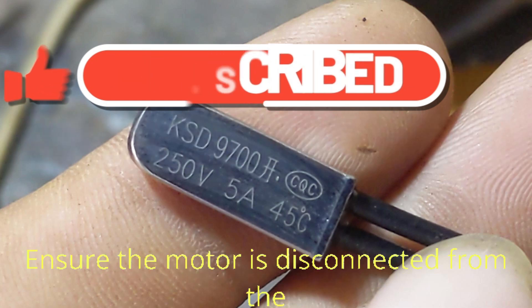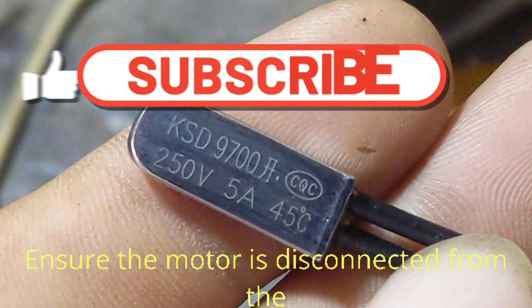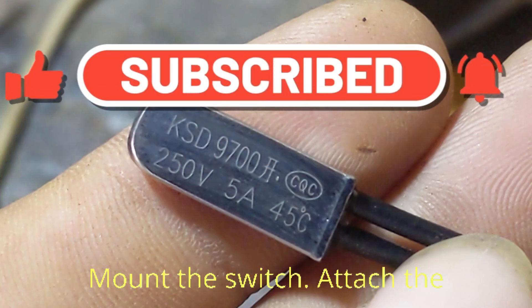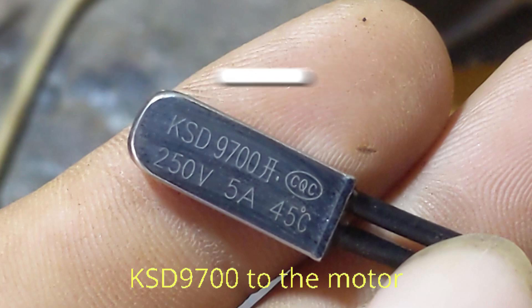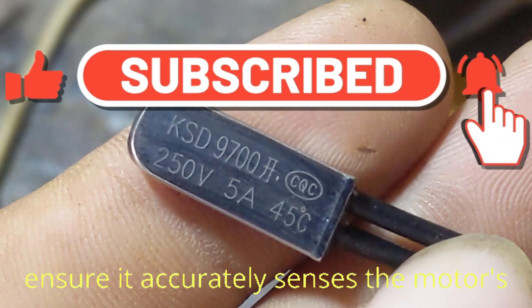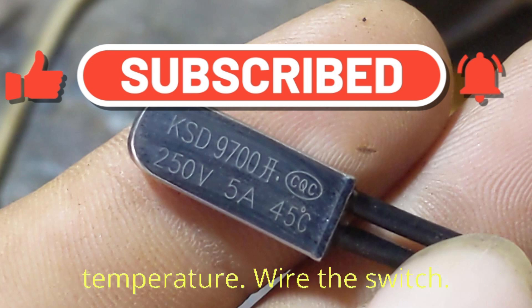Disconnect power: ensure the motor is disconnected from the power supply before installation. Mount the switch: attach the KSD 9700 to the motor housing or a suitable heat sink to ensure it accurately senses the motor's temperature.